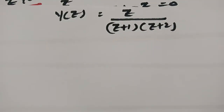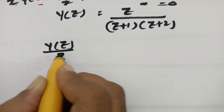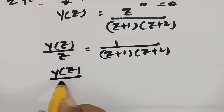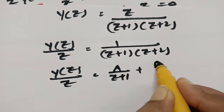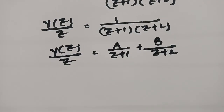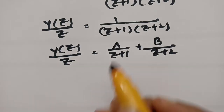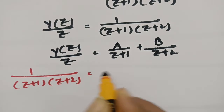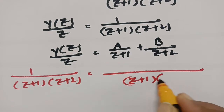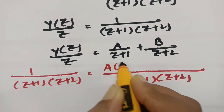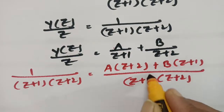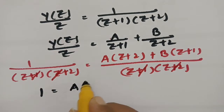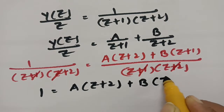Sending Z to the other side: Y(z)/Z equals 1 divided by (Z+1)(Z+2). We resolve into partial fractions: Y(z)/Z equals A/(Z+1) plus B/(Z+2). Taking LCM as (Z+1)(Z+2), the numerator becomes A(Z+2) + B(Z+1) equals 1.